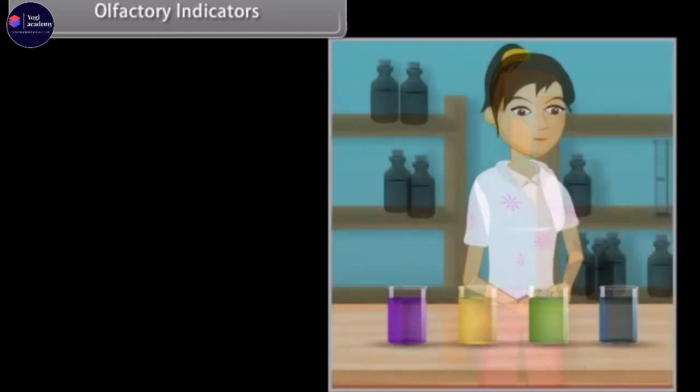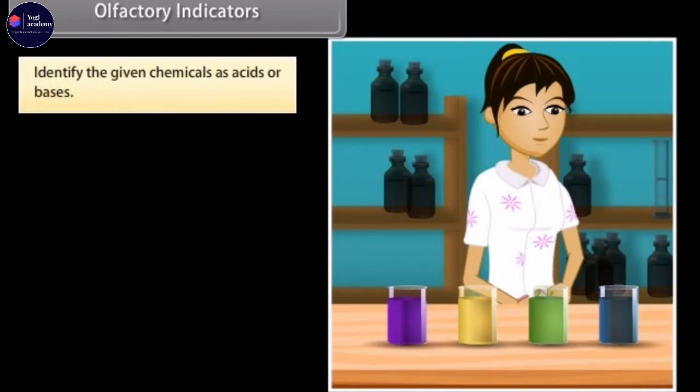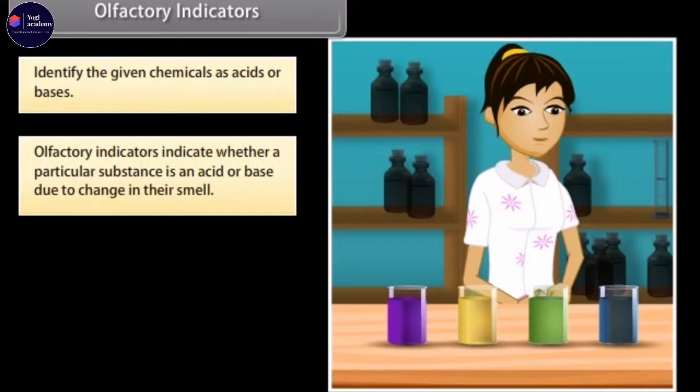Olfactory indicators indicate whether a particular substance is an acid or base due to change in their smell. They are used in the laboratory to test whether a solution is a base or an acid by a process called olfactory titration.